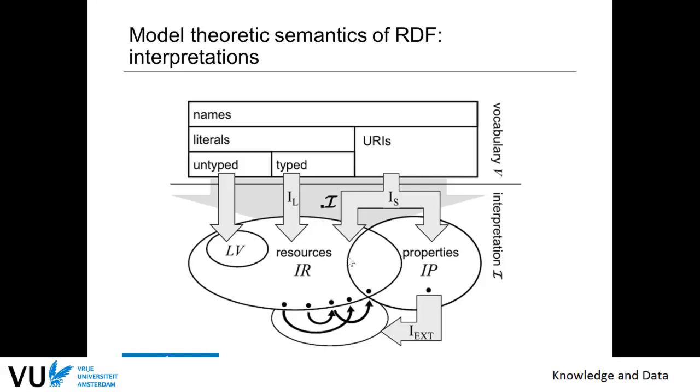If we are interpreting an object in the object position then we have the choice of this being either a literal or URI or even a blank node. So this makes a very complicated picture of how we could interpret a triple.